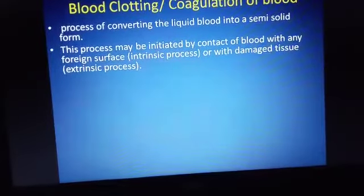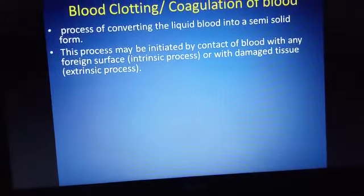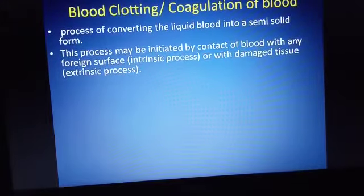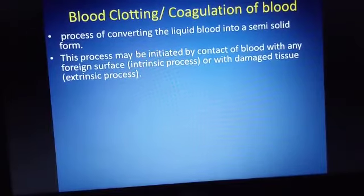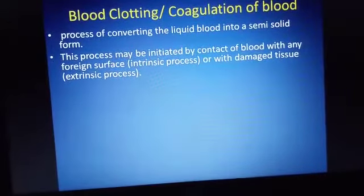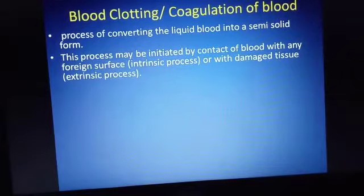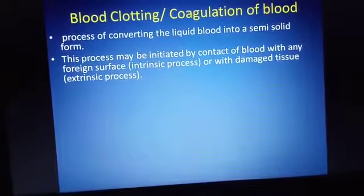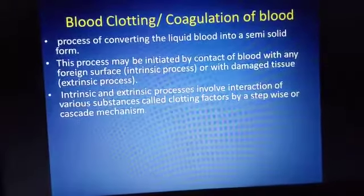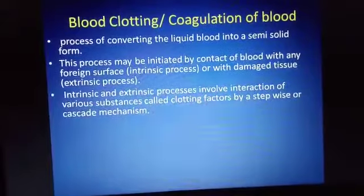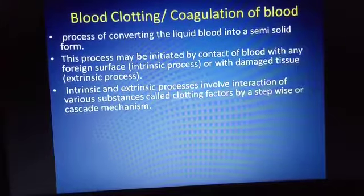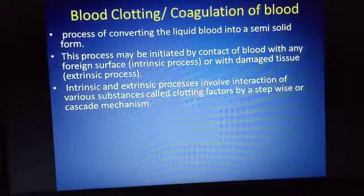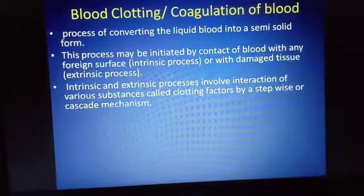Whenever body cells or blood come into contact with an external factor, the process of blood coagulation is initiated. Any kind of intrinsic or extrinsic process which leads to damage of internal tissue or the body surface results in blood oozing out from the blood vessel. As blood starts to ooze out, it leads to conversion of liquid blood into a semi-solid jelly-like structure.